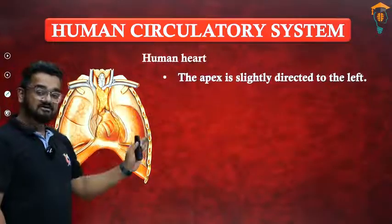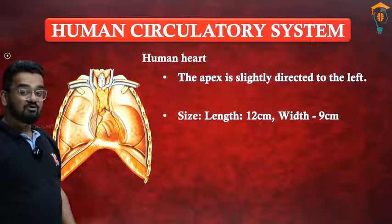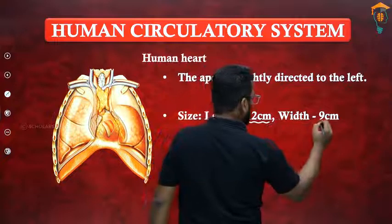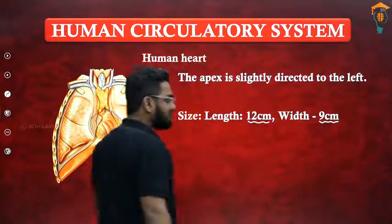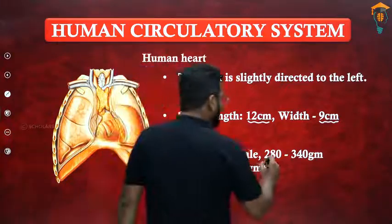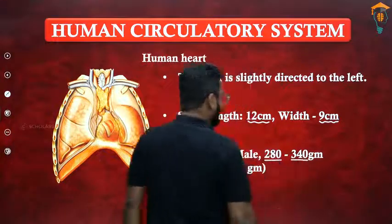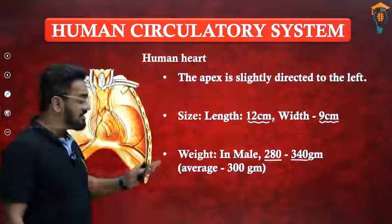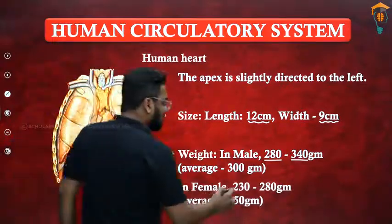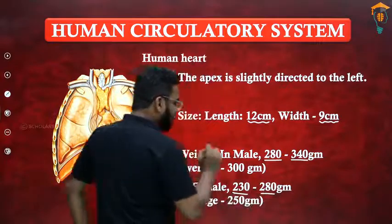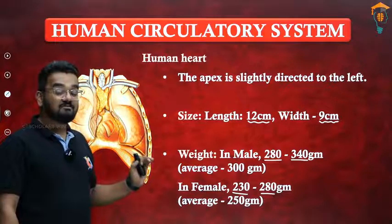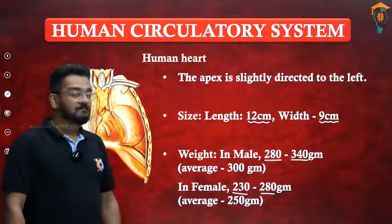The apex is slightly tilted towards the left. In terms of size, the heart is 12 centimeters in length and 9 centimeters in width. In terms of weight, in males it is around 280 to 340 grams, on average about 300 grams, whereas in females it is around 230 to 280 grams, on average about 250 grams. So the heart in females is smaller compared to males.